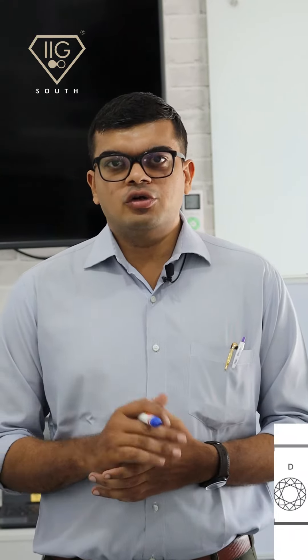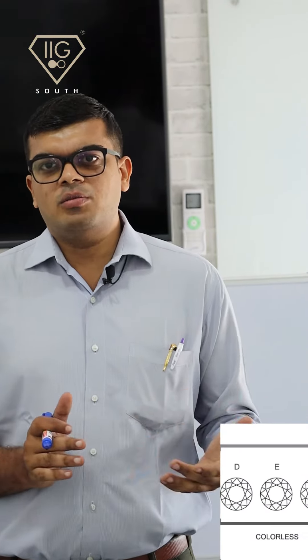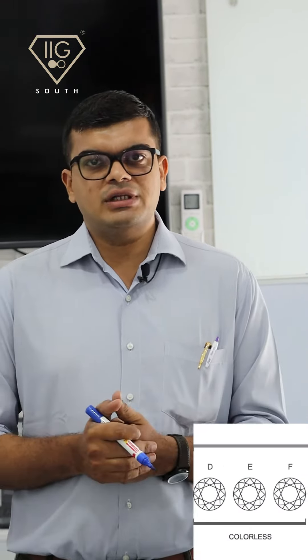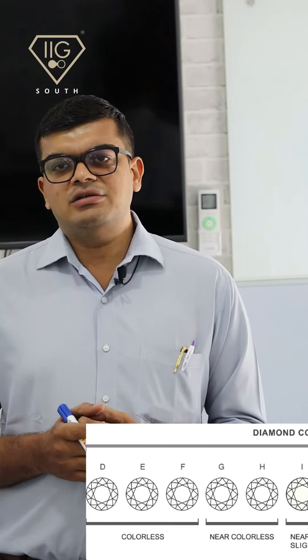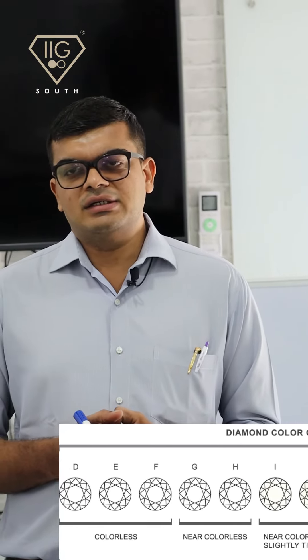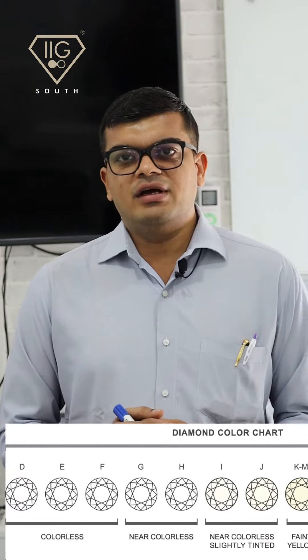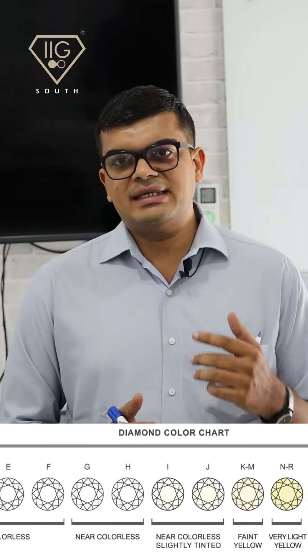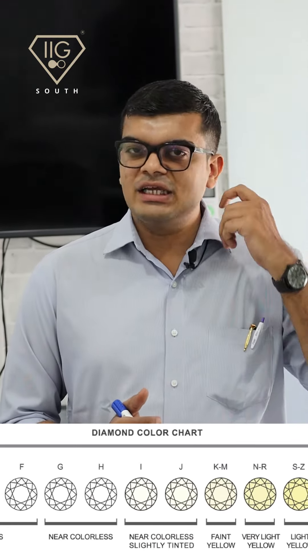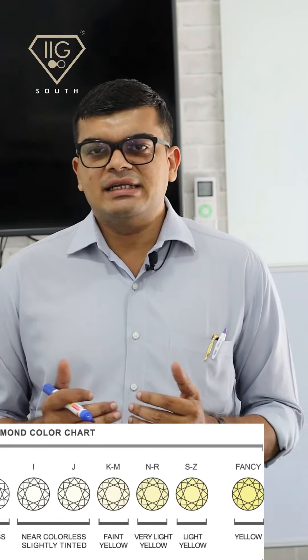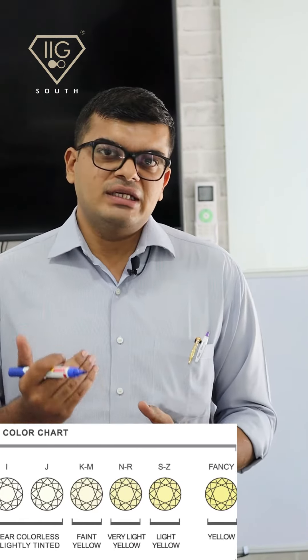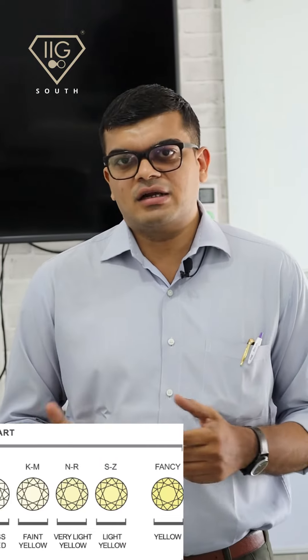There is an assessment of the normal color range according to international standards, starting from D color and ending at Z color. Within this D-to-Z scale, they assess the degree of variation. D means the stone is absolutely colorless, whereas Z means it has color both in the pavilion and the crown.